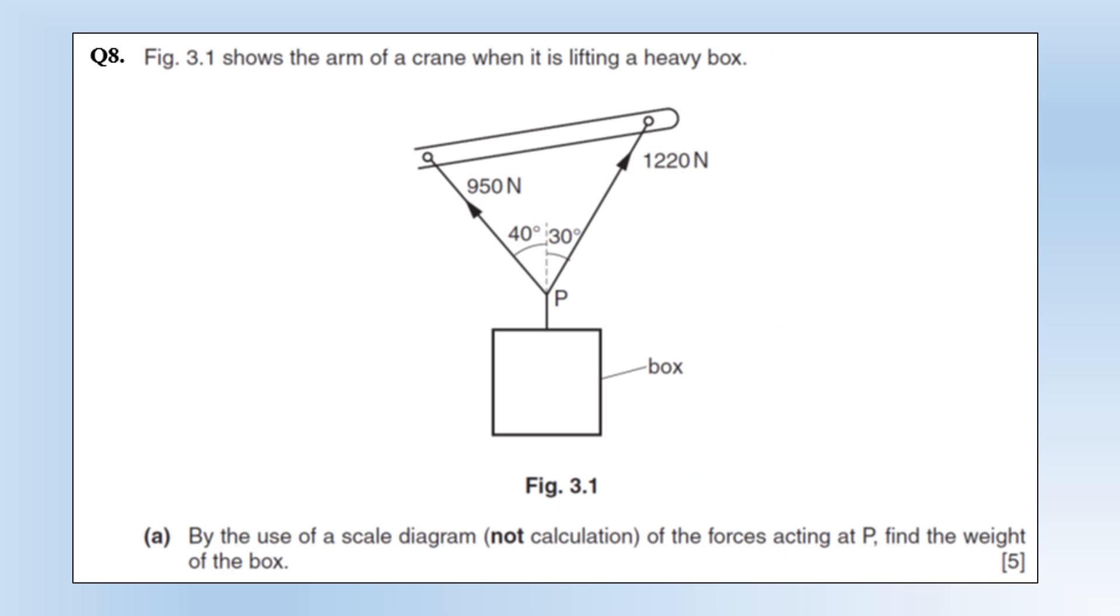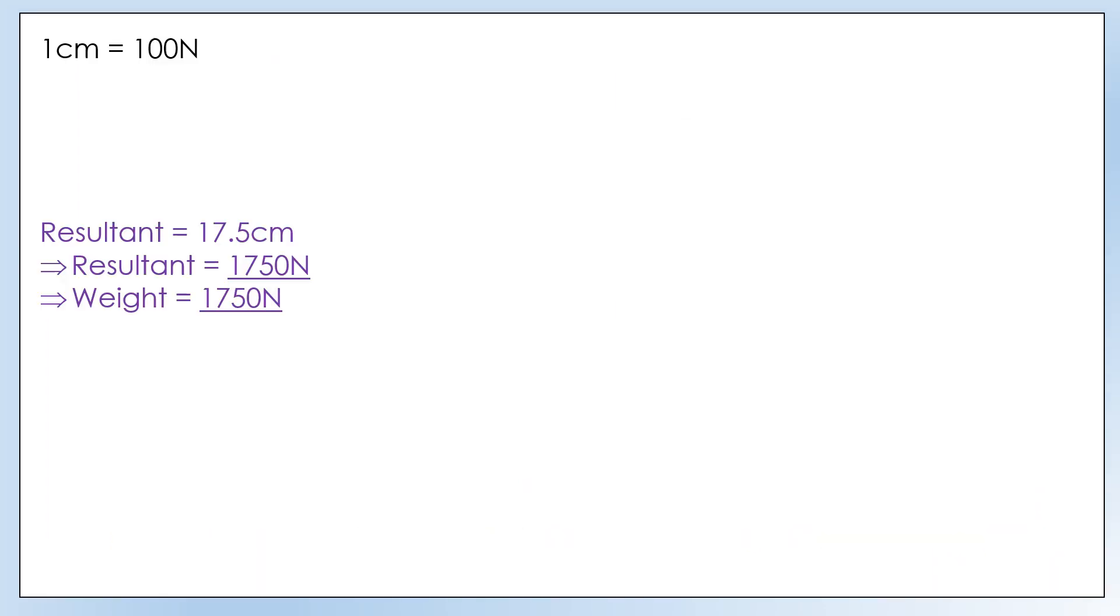Okay so the final question the diagram shows the arm of a crane when it's lifting a heavy box. So we've got two forces with different magnitudes at different angles. Using a scale diagram not by calculation find the weight of the box. So what we're going to do is draw a diagram showing the vector addition of these two forces. So let's do that. So I'm going to use the scale one centimeter is 100 newtons